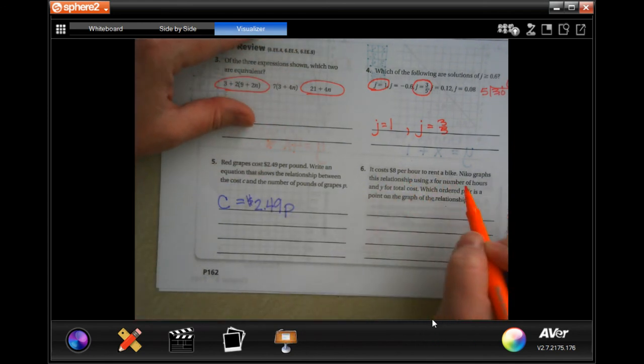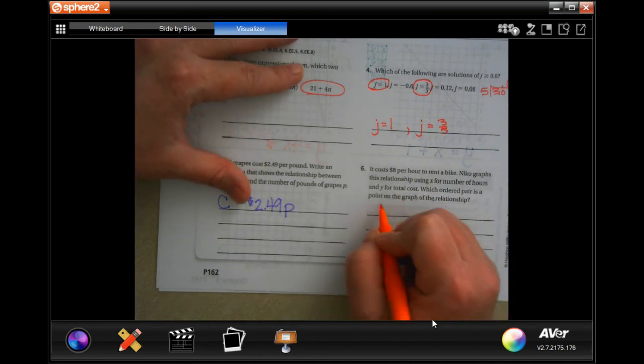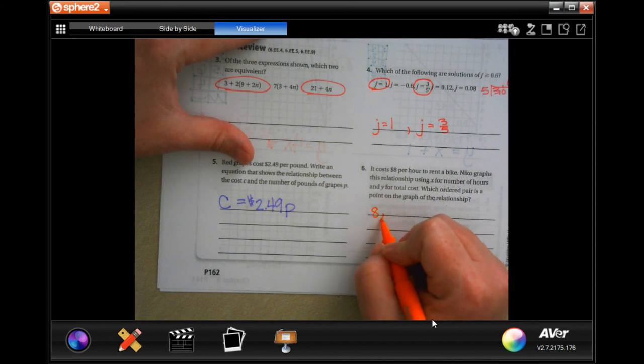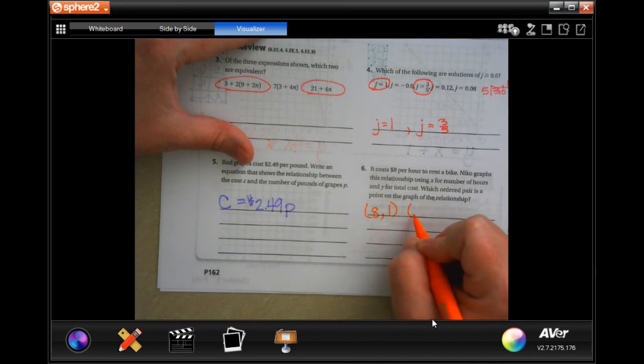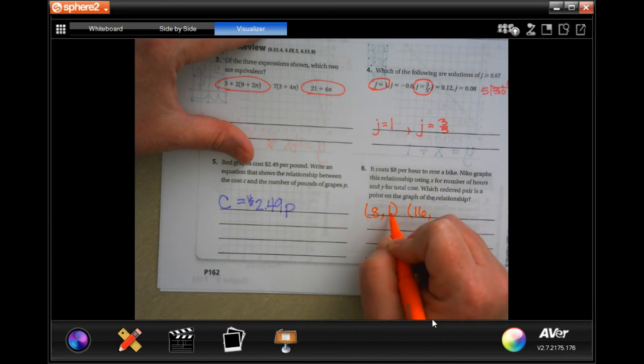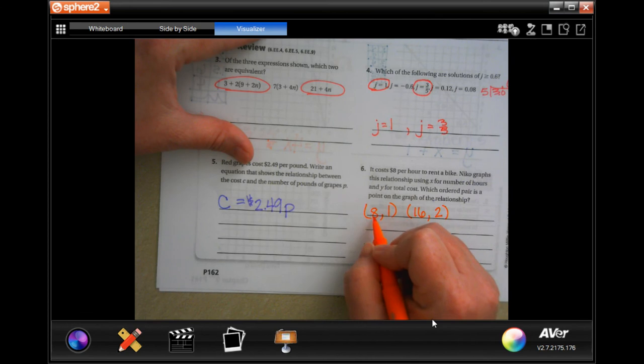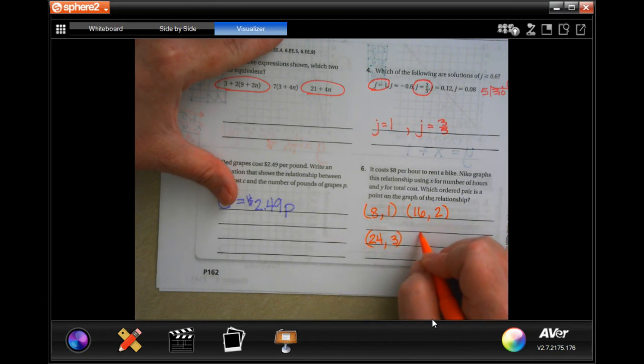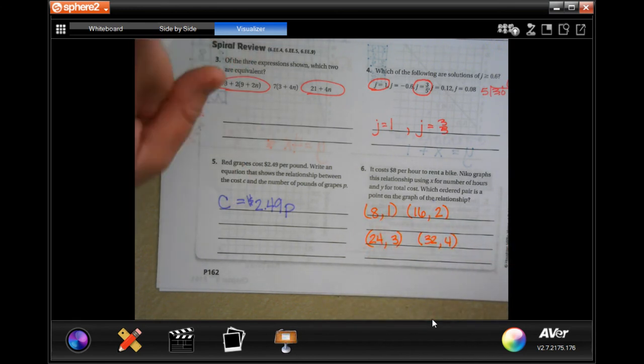It costs eight dollars per hour to rent a bike, and you're going to graph the relationship using x for the number of hours and y for the total cost. Which ordered pair is a point on the graph? So we could have eight and one. Now we just need to multiply. Eight times two is 16, one times two is two. We could do eight times three is 24, one times three is three. We could do eight times four is 32, one times four is four. So any of those will work, you just got to have one of them.